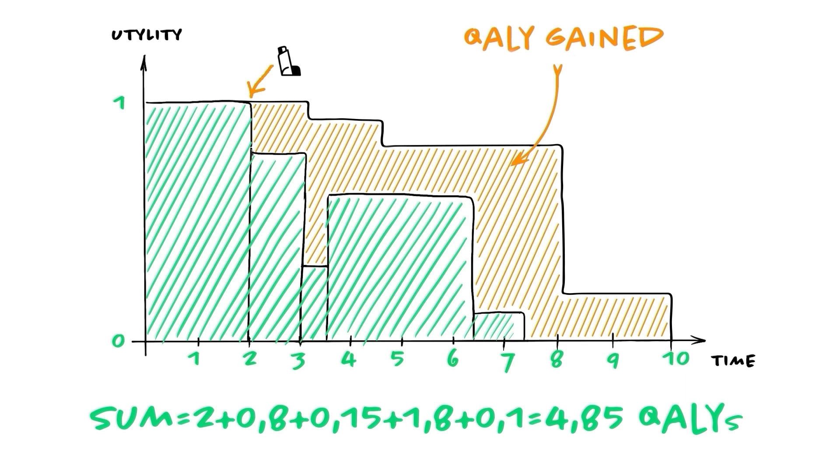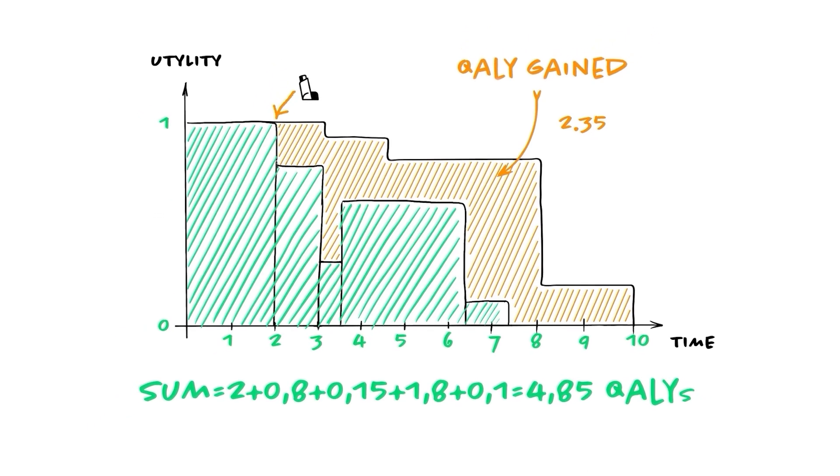In our case, the orange area in color represents the QALYs gained, meaning that with the new intervention, this patient would have had accumulated 4.85 plus 2.35 equals 7.2 QALYs in 10 years.